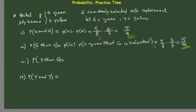Having Y then G is the reverse: first we select yellow, then green. The probability of yellow is 3/8. Then out of the remaining seven jelly beans, we select one green out of five, giving us 3/8 times 5/7. This gives us the same result as before: 15/56.